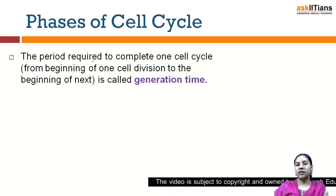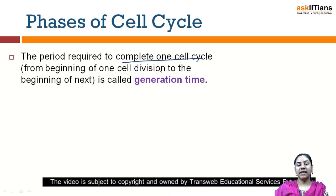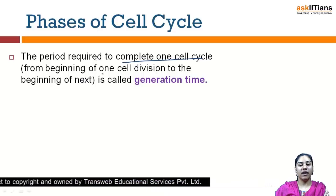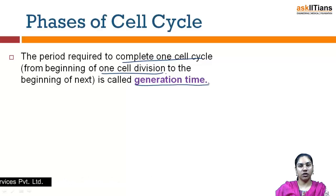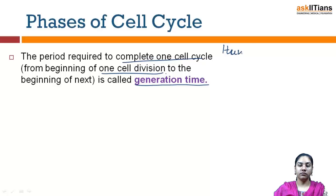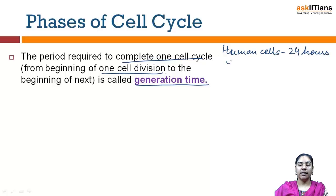The period required to complete one cell cycle — from the beginning of one cell division to the beginning of the next — is known as generation time. The generation time for human cells is 24 hours, whereas it is 90 minutes for yeast cells.